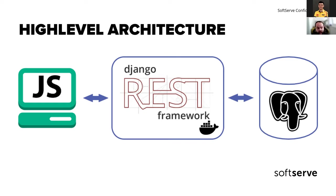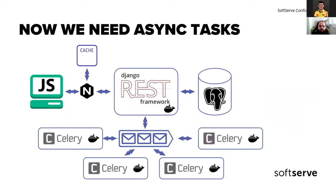So for 90 percent of tasks you take a database model, write code on this model, define a Django REST framework serializer, define views based on those models, and just use it — and it works. But sometimes you need some asynchronous tasks. For example, a basic one is a long-running task like sending a mail. You can't send a mail from a synchronous view — it will block one of your WSGI workers. In such cases you add some queue, for example RabbitMQ or just Redis as a queue, and start distributing some tasks to the worker.